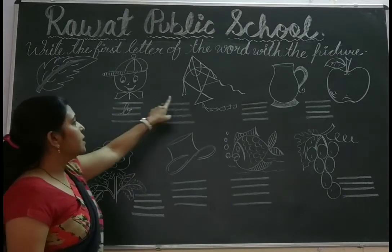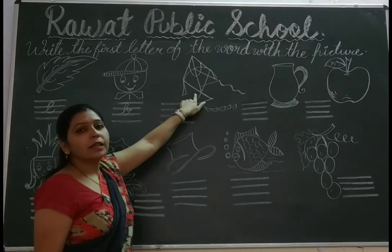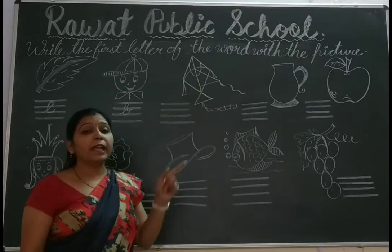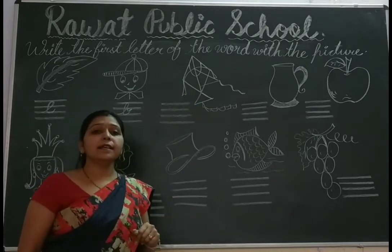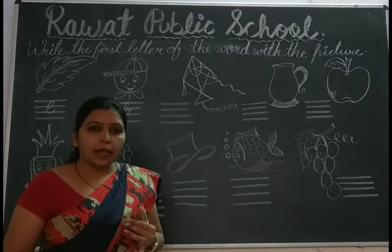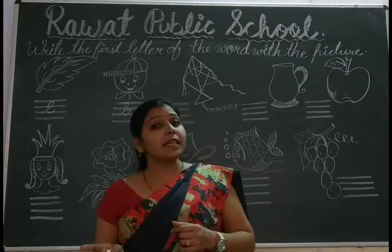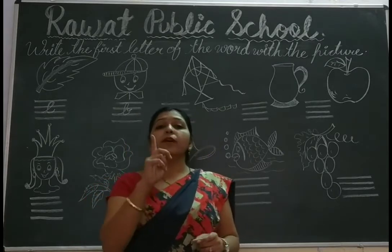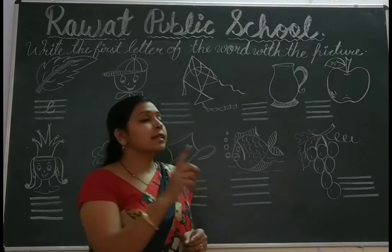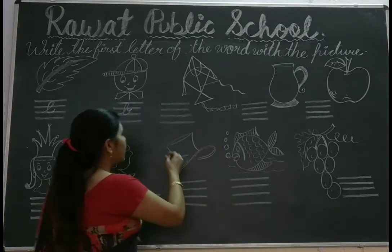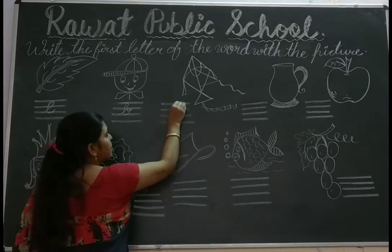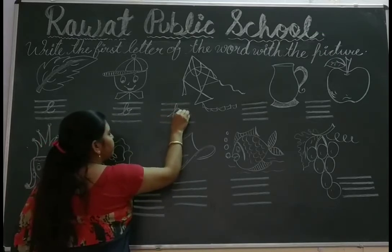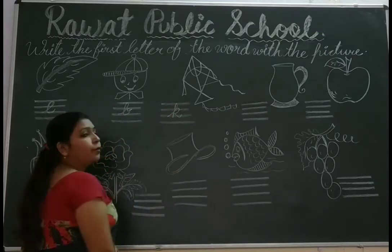Next, it is a picture of Kite. And the spelling of Kite is K-I-T-E. So Kite's first letter is K. What is it? K. So write it here: K.